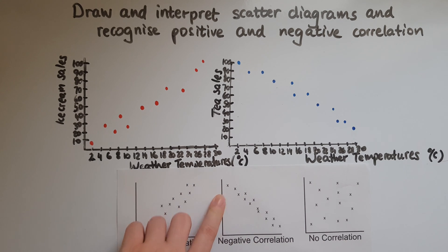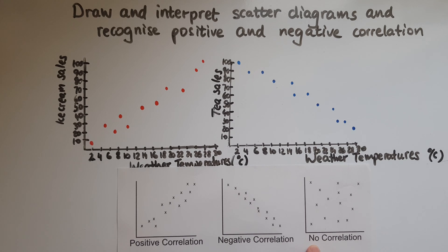When one increases, the other decreases. And what this is here is no correlation. So you can't really see a line either going upwards or downwards.